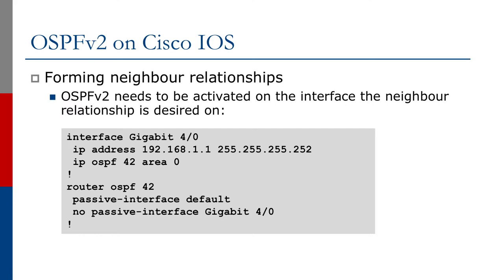Forming neighbor relationships is done by starting the 'router ospf' process, setting the process ID, marking all interfaces as passive, then using 'no passive' for the interface where you want the adjacency. Then go to the interface and activate OSPF using the 'ip ospf <process-id>' command, specifying which area the interface will sit in. This is the modern configuration syntax.